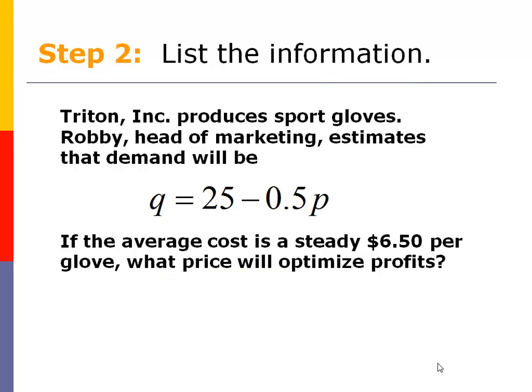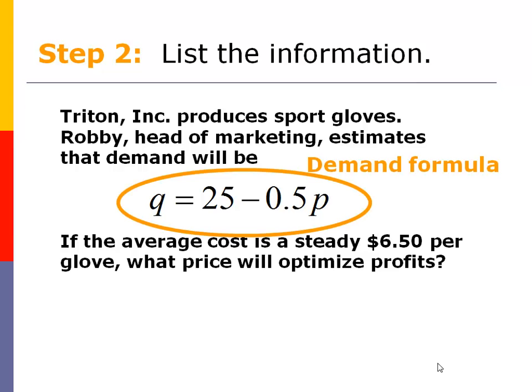So step number two, we got a list of information in the word problem. What information did they give us? I'm looking at that formula right there in the middle, they gave us the demand formula. And also they gave us information about average cost. I got AC, average cost is equal to $6.50. So those are the two pieces of information that I've got to play with.